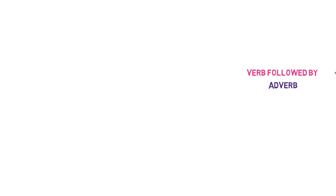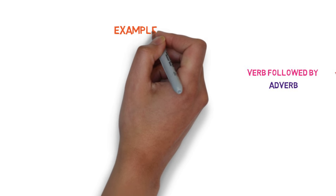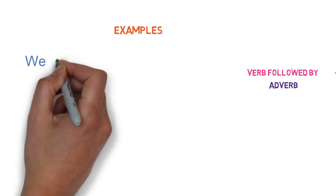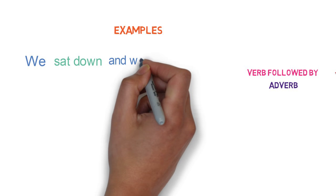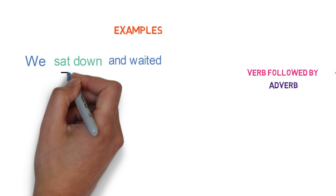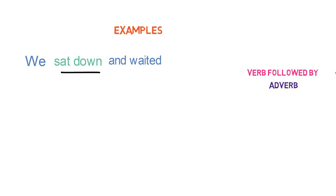Let's start with examples of verbs followed by adverbs. 'We sat down and waited.' Here, 'sat' is the verb and 'down' is the adverb. And the whole group of words 'sat down' is a phrasal verb containing an adverb.